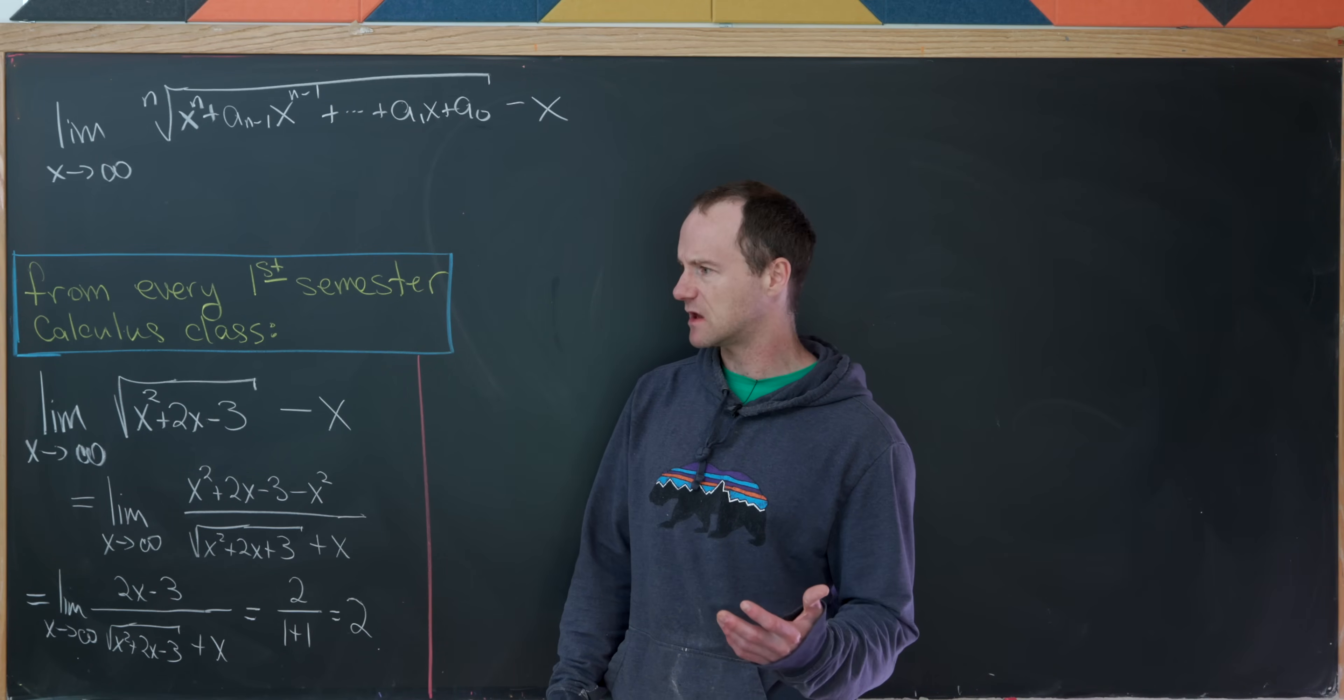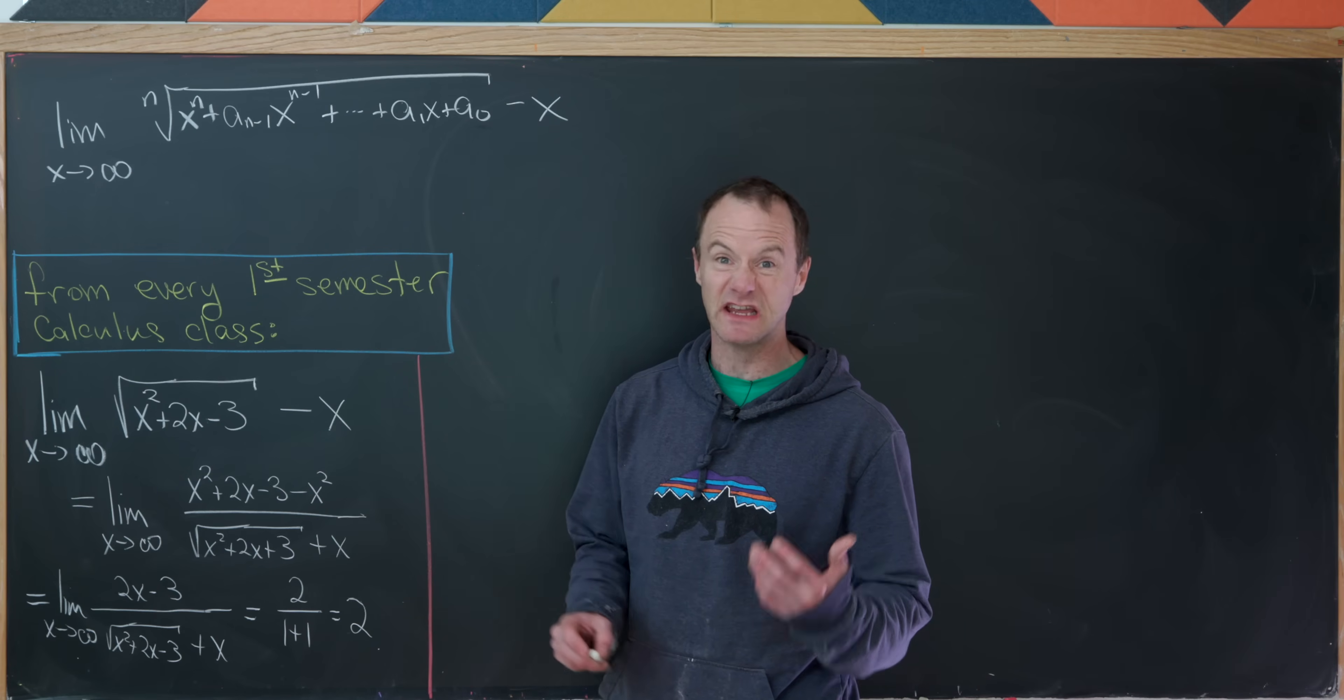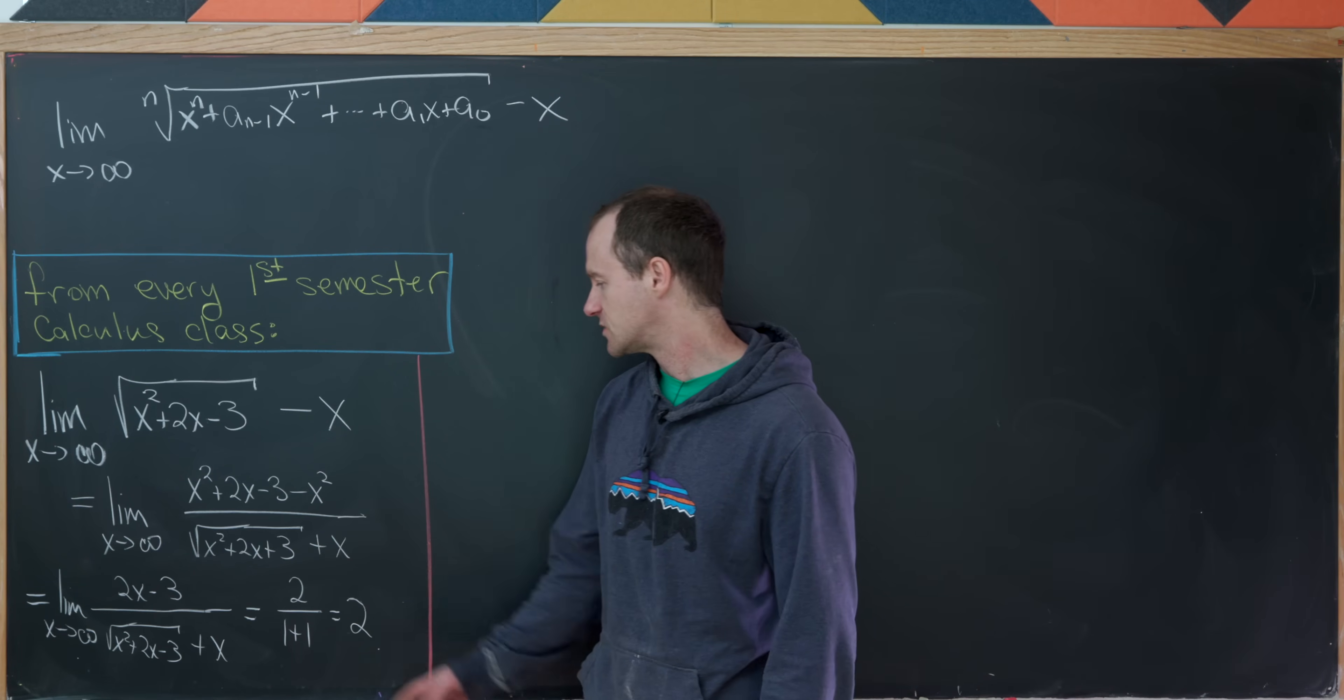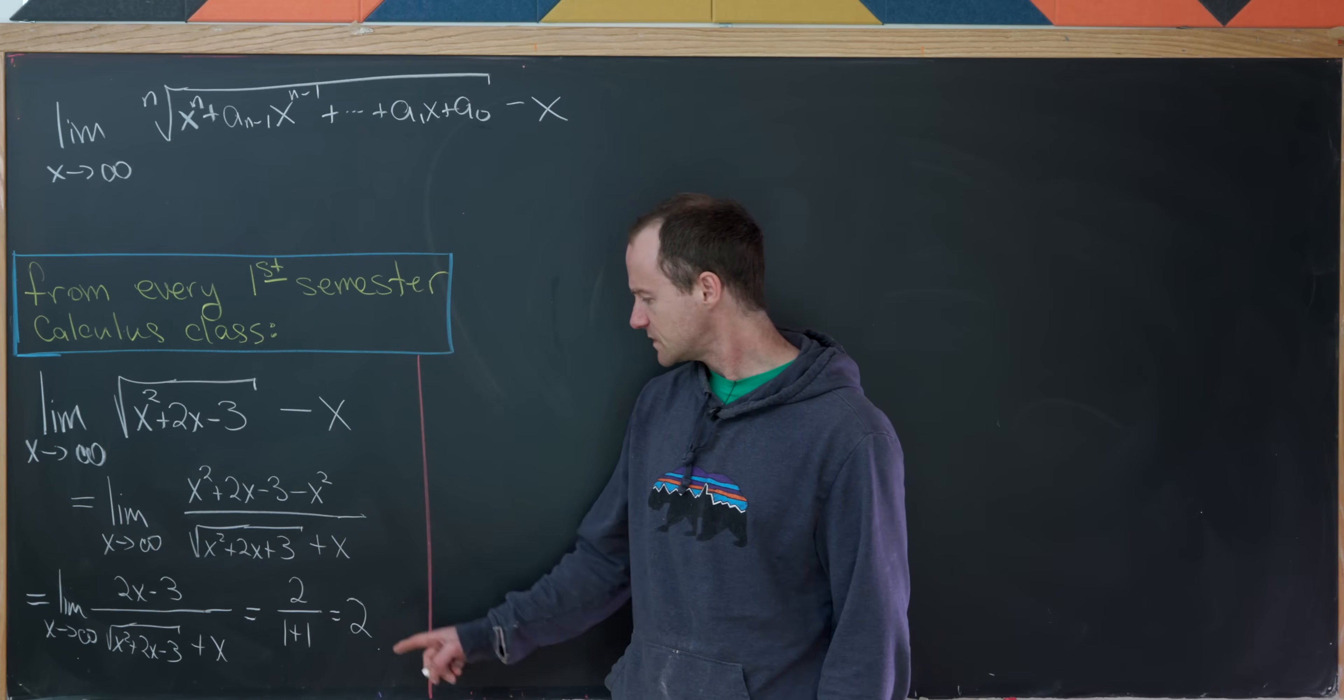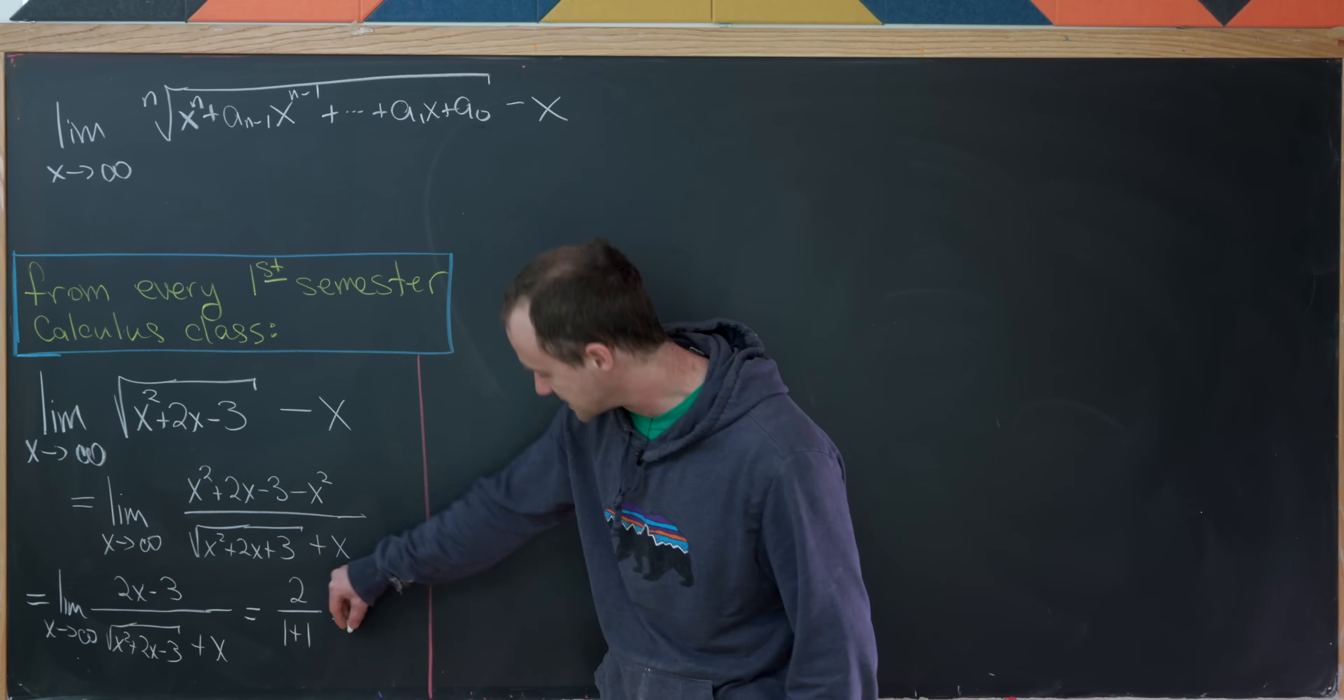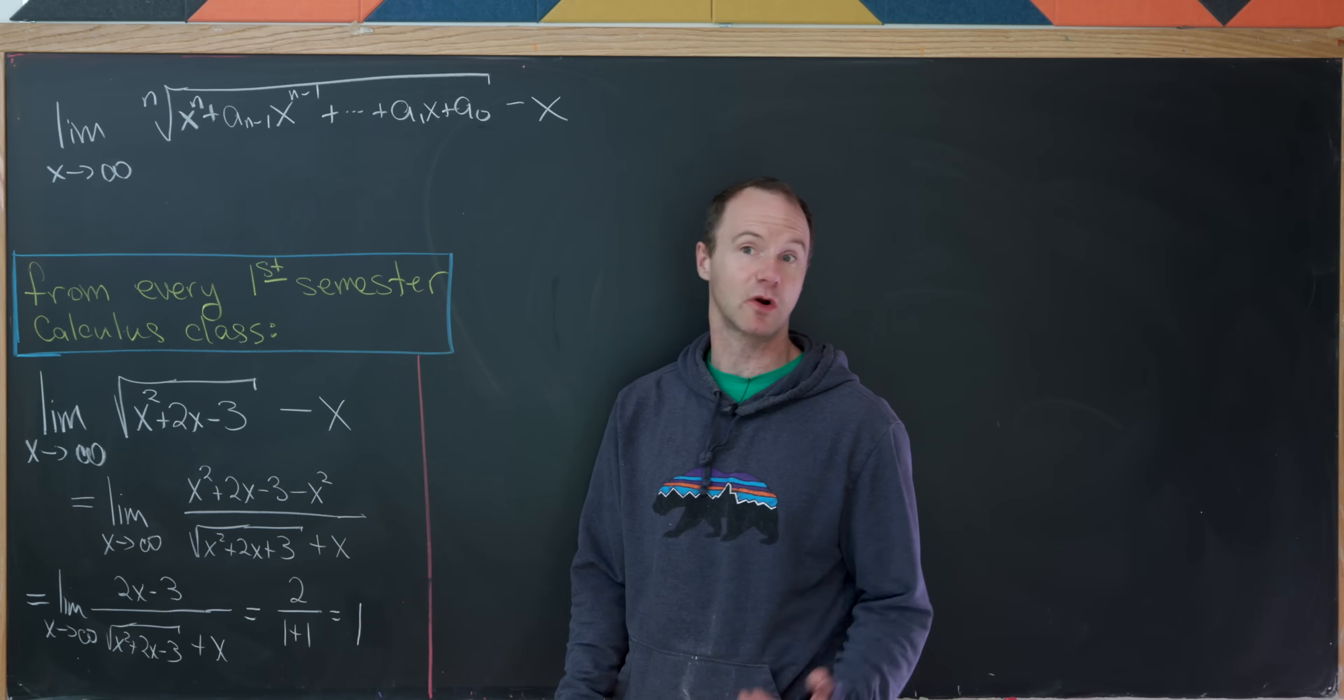That means my limit can be found just by looking at the leading coefficients. So that'll give me a 2 in the numerator and then a 1 plus 1 in the denominator. So in the end that's going to simplify to the number 1.